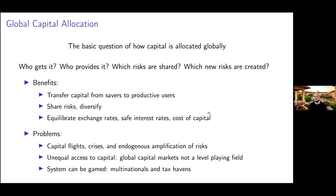This goes back to Friedman's stabilizing speculation. Capital flows might equalize or stabilize safe interest rates, government rates around the world, or even the private cost of borrowing. It might be that firms in a particular country are facing high cost of capital because there isn't enough capital domestically, and if capital comes in from abroad, that lowers the cost of capital. Of course, over the years we've come to understand that there are a number of problems that also come with the global allocation of capital.